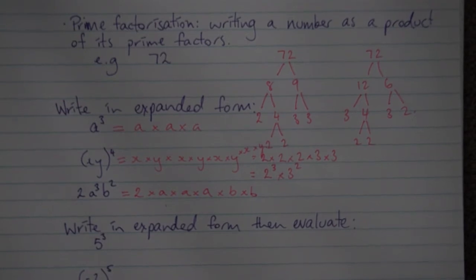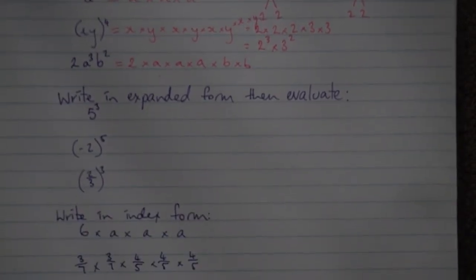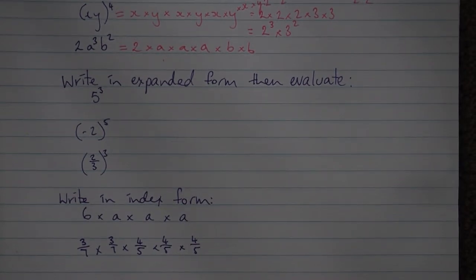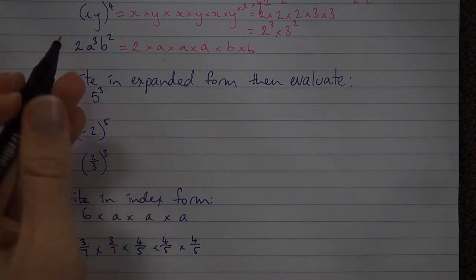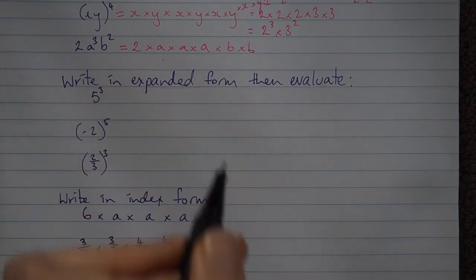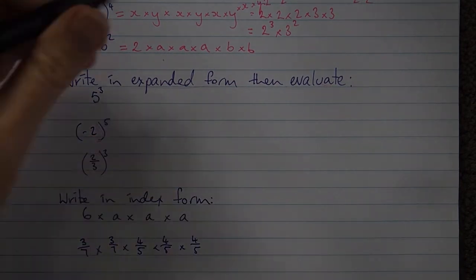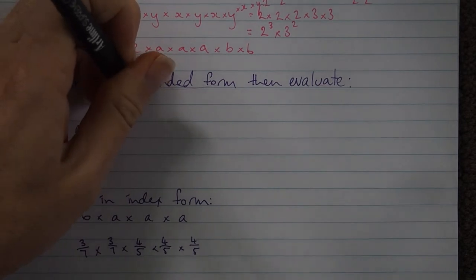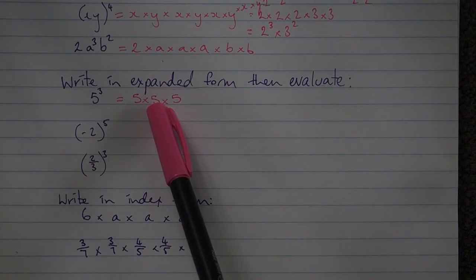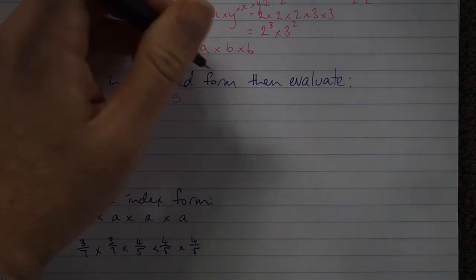Sometimes we may be asked to either write in expanded form then evaluate, or write something as a basic numeral — remembering a basic numeral is a common number. For 5 to the power of 3, expanded form gives us 5 times 5 times 5, which equals 25 times 5, giving us 125.